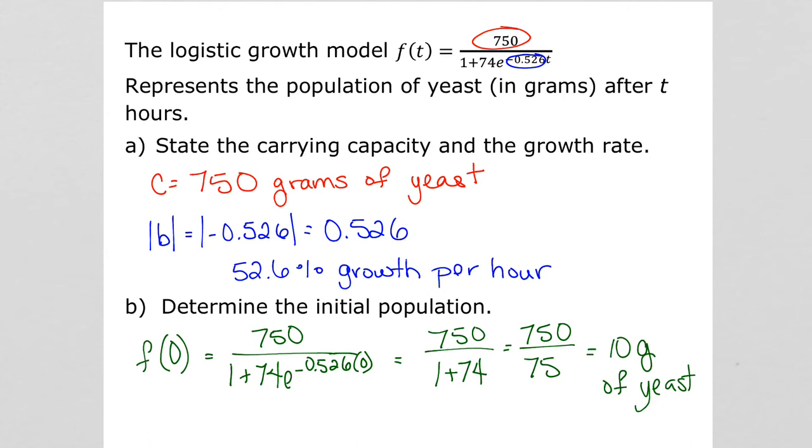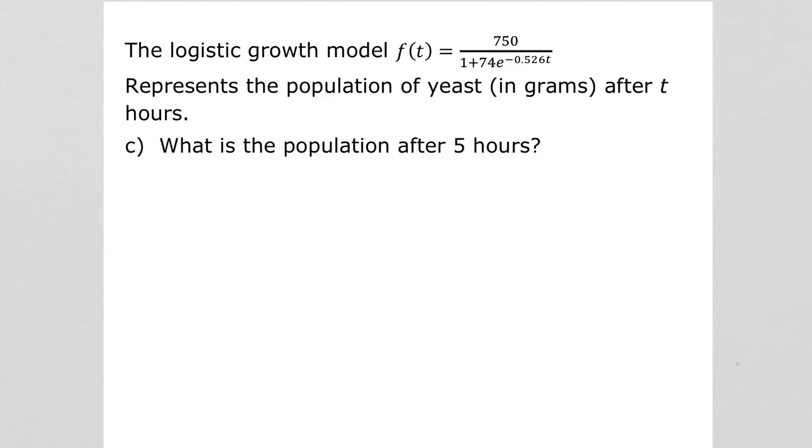Part c asks what is the population after five hours. So we plug in five for t. Put that in your calculator, you'll get 118 grams of yeast.